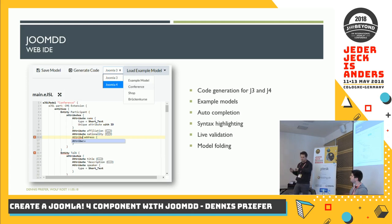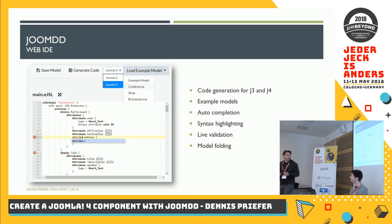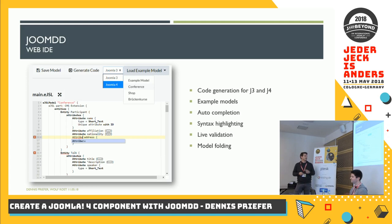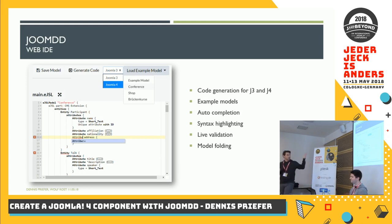Because we don't have that much time and there's lunch after this session, we will just show a simple model. We have model folding — typical stuff you need — and of course we have a code generator where you can decide if you want to generate for Joomla 3 or Joomla 4.